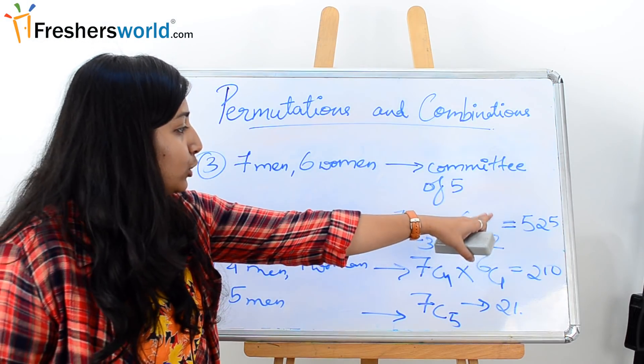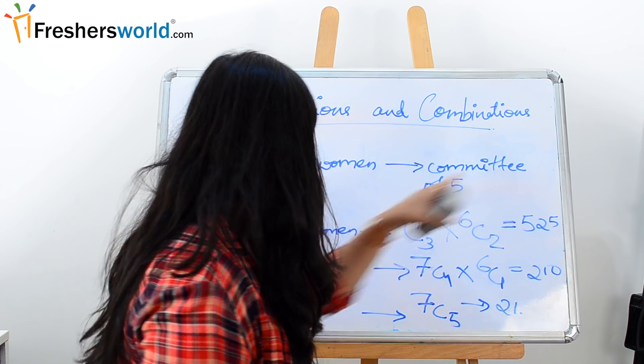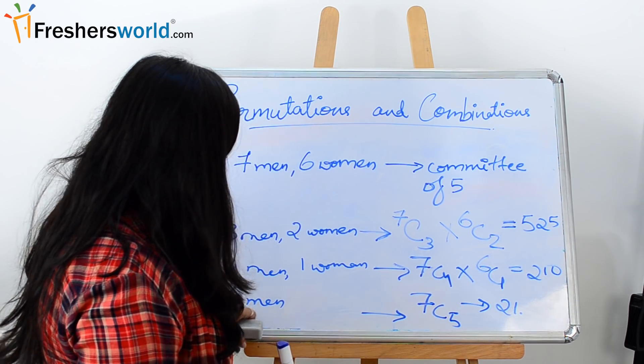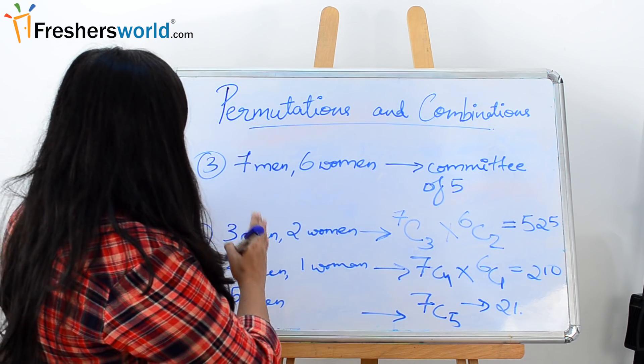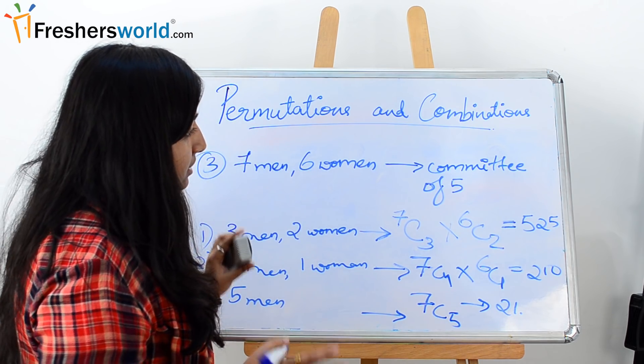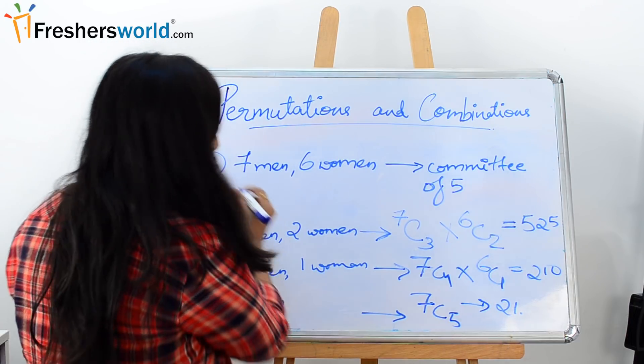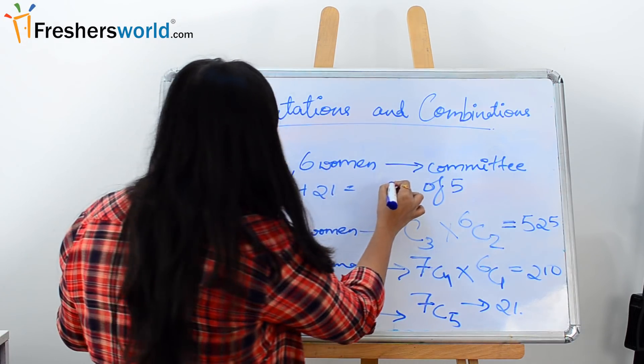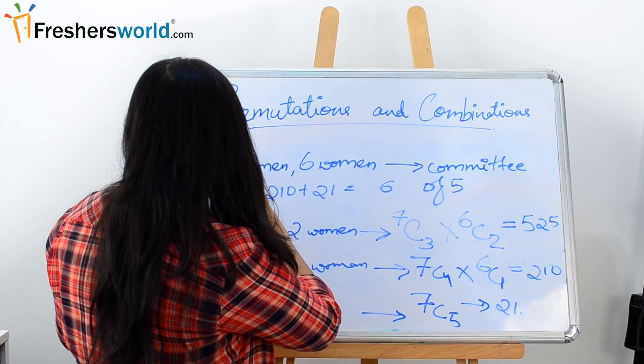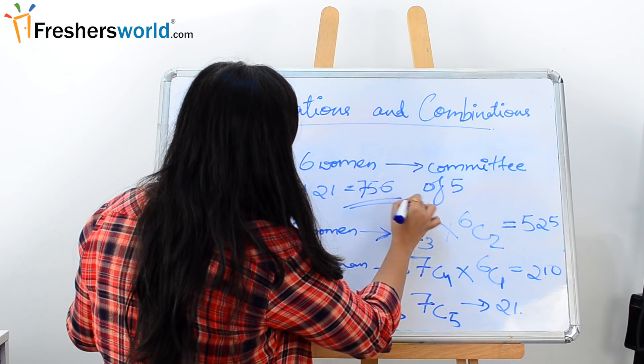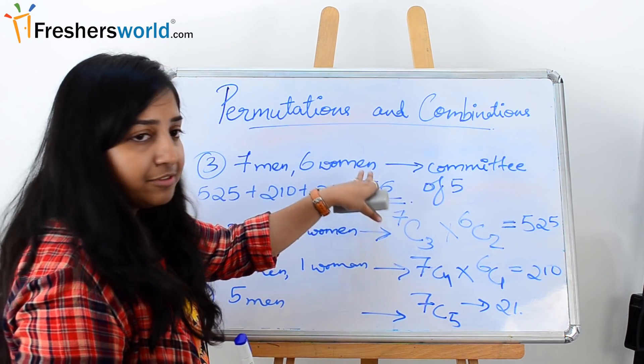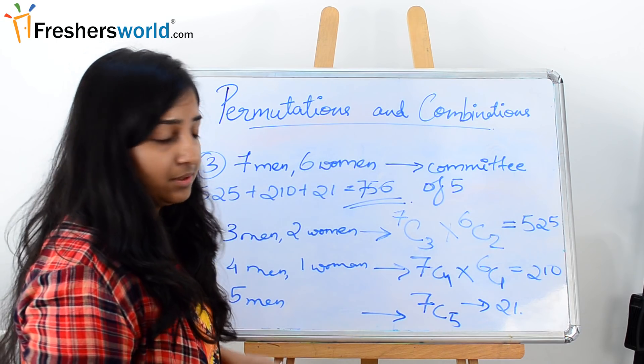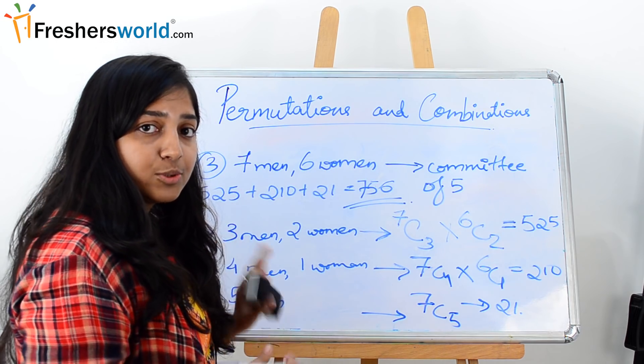So we see 3 different cases. If we take 3 men and 2 women, we get total number of combinations, that is 525. If we take 4 men and 1 woman, we get a total combination of 210. If we take 5 men, we get 21. So we have 7 men and 6 women, so the total number of combinations that we can create out of it would be 525 plus 210 plus 21, which would be equal to 756. So in 756 different ways we can create a committee of 5 members from the 7 men and 6 women. So this was our third question.